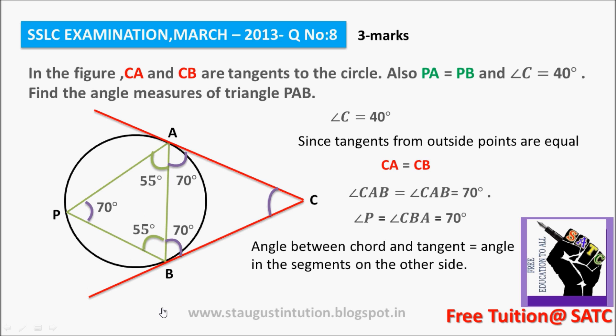So this is the answer. Triangle PAB is an isosceles triangle with angle P equal to 70 degrees and the other two angles each equal to 55 degrees.